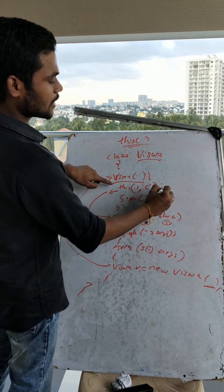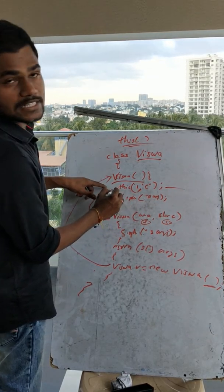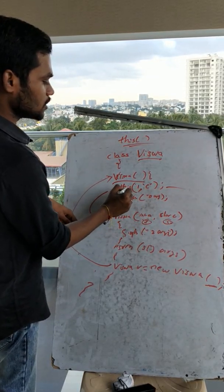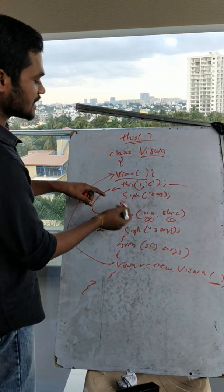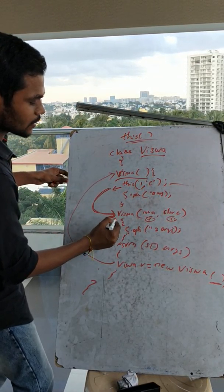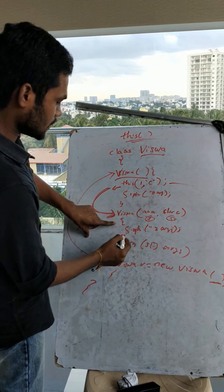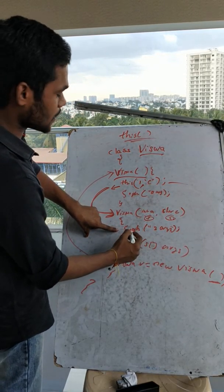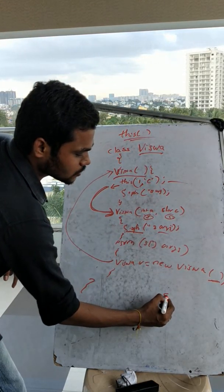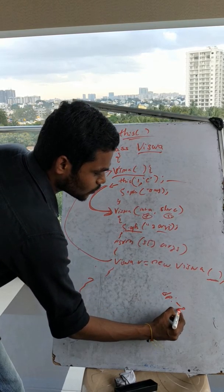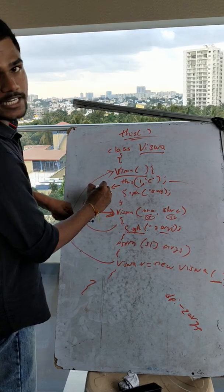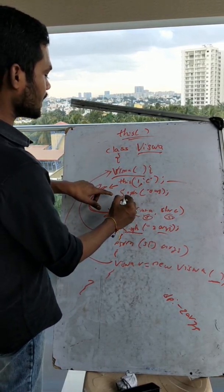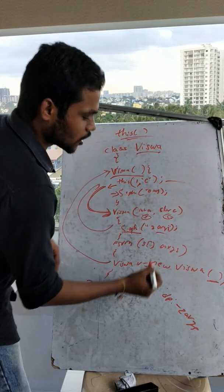Execution will start from the first step. Here the first step is this step. Then you will go to here. There is an output print statement with two arguments. So the output will print two arguments. Then you will go back to the calling step, and it will print zero arguments.